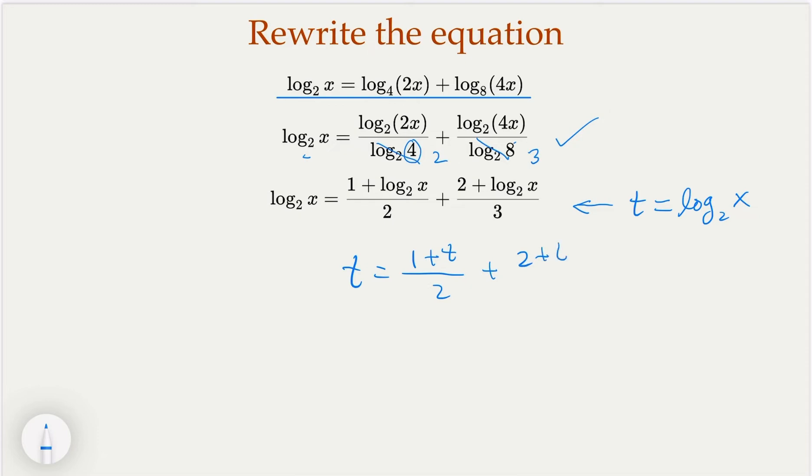Of course, that's just a linear equation with one variable. You multiply 6 on both sides. 6t equals 3 plus 3t plus 4 plus 2t. Then I have 7 plus 5t. Of course, t equals 7.